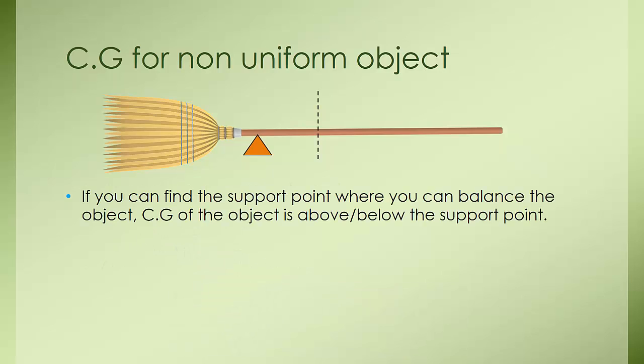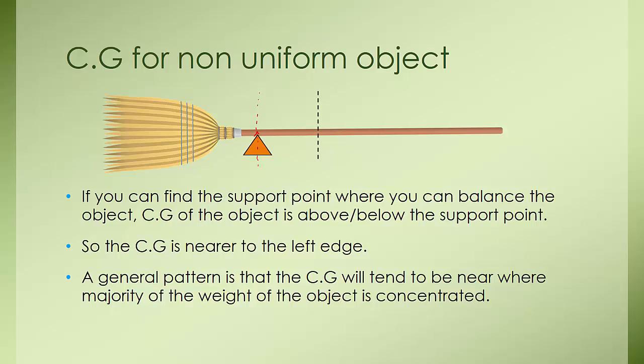You can find the support point where you can balance the object. The center of gravity is right above or below the support point — which means if you are able to balance over here, your CG will be somewhere along this line. For this object, the CG is nearer to the left. The general pattern is that the center of gravity tends to be near where the majority of the weight of the object is concentrated. For the broom, the majority of the weight is on the heavier bristle side, so the CG shifts towards that side rather than being at the geometric center.